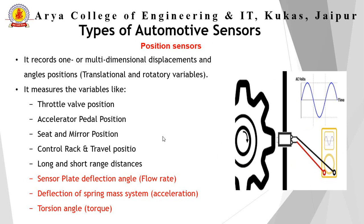Position sensors define distance, angular rotation, and can also count RPM. The variables measurable by position sensors are divided into two categories: directly measured variables and indirectly measured variables. Directly measured variables include throttle wall position, accelerator pedal position, seat and mirror position, control rack and travel position, and long and short distances.